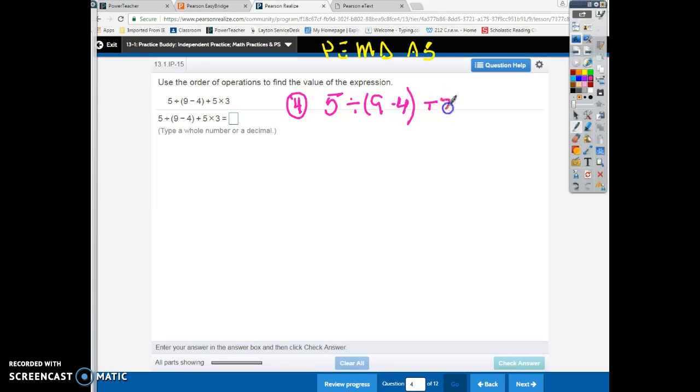We want to solve parentheses first. That means we have to do that problem first. And nine minus four is five. And now I bring down everything else. Five divided by, there's my answer, five plus five times three.